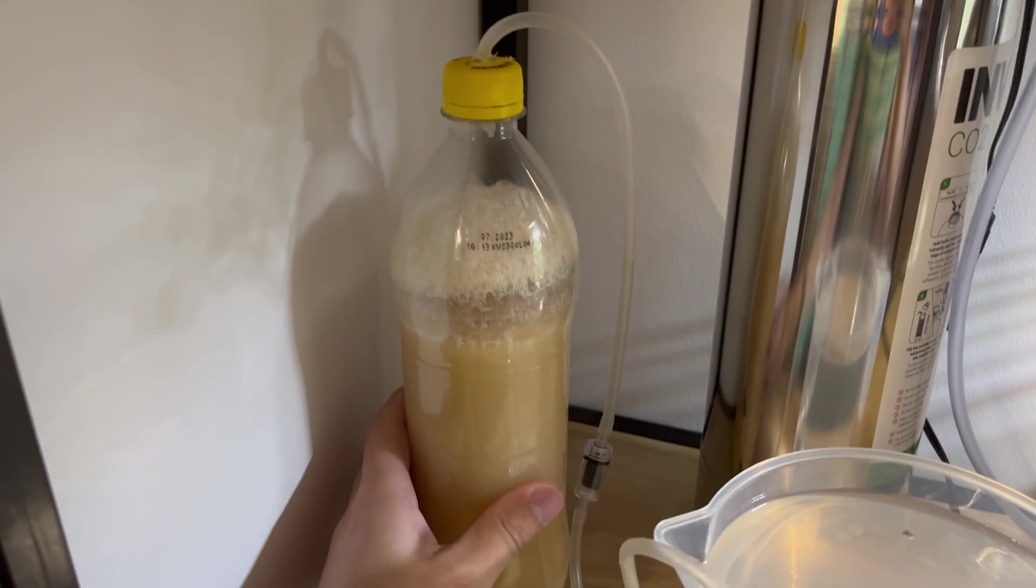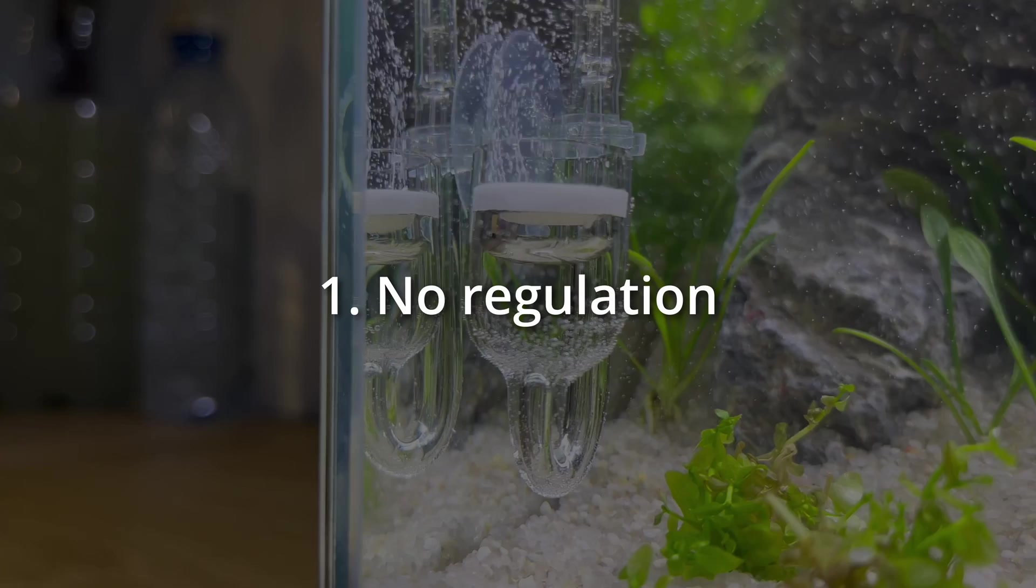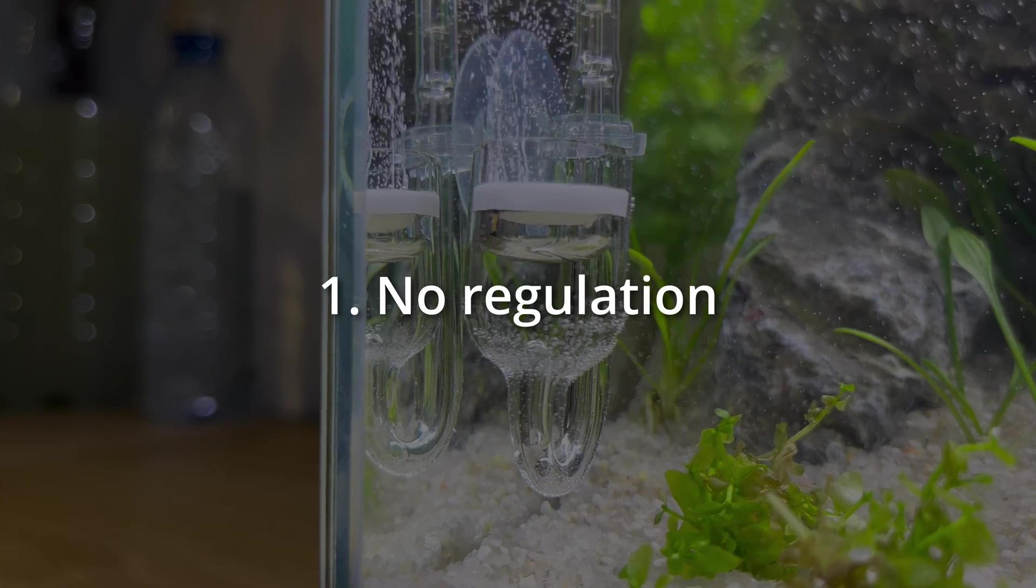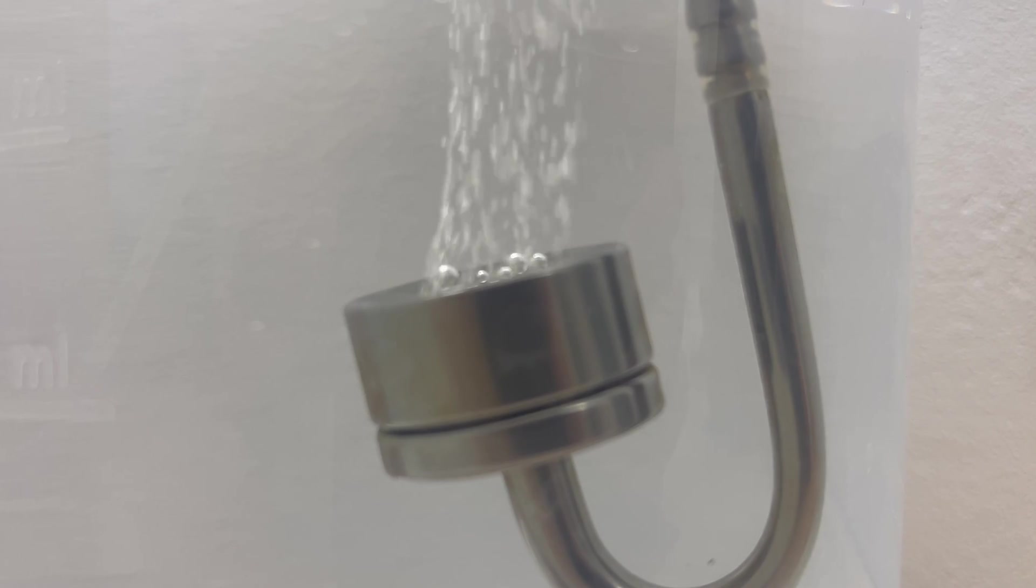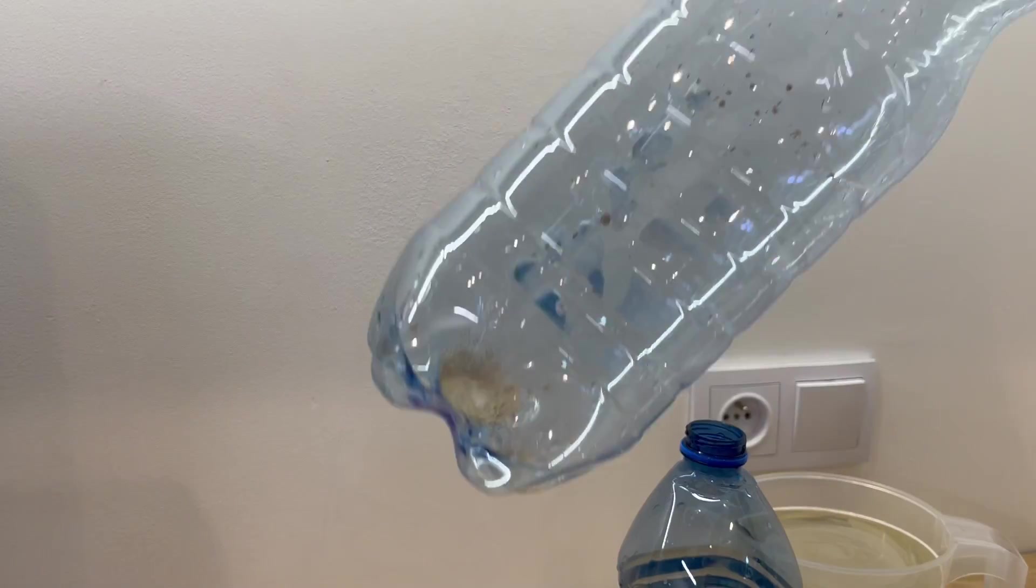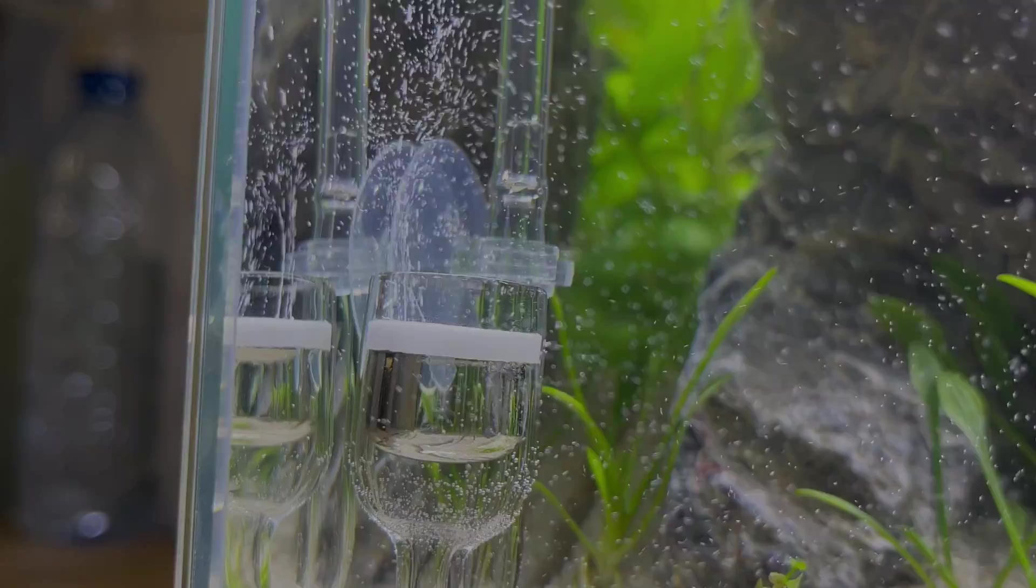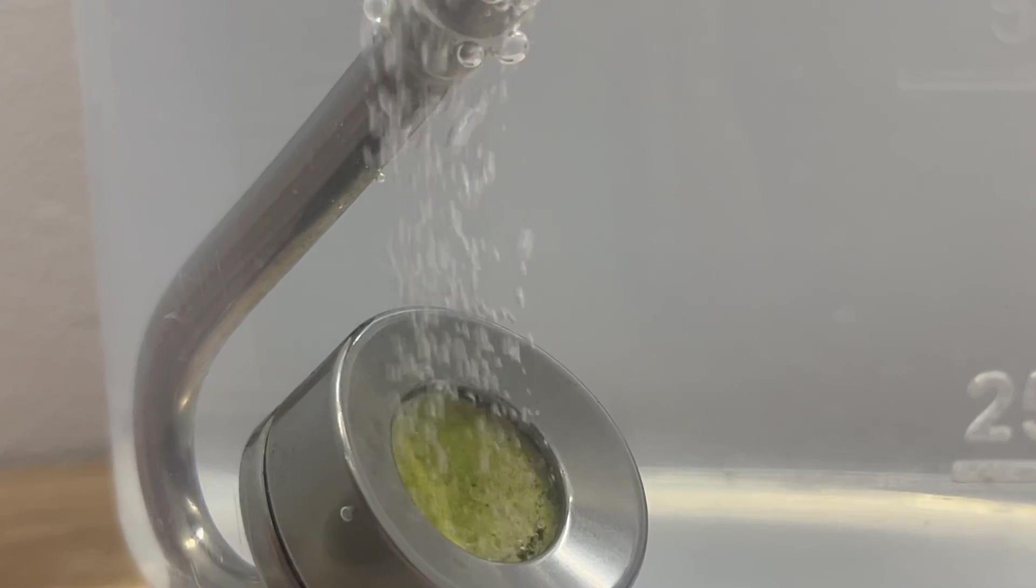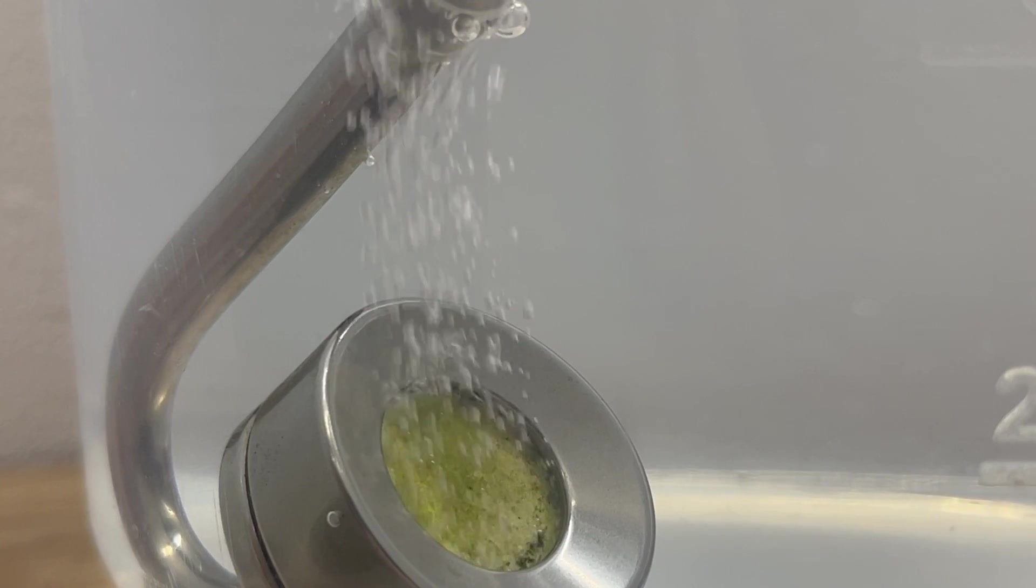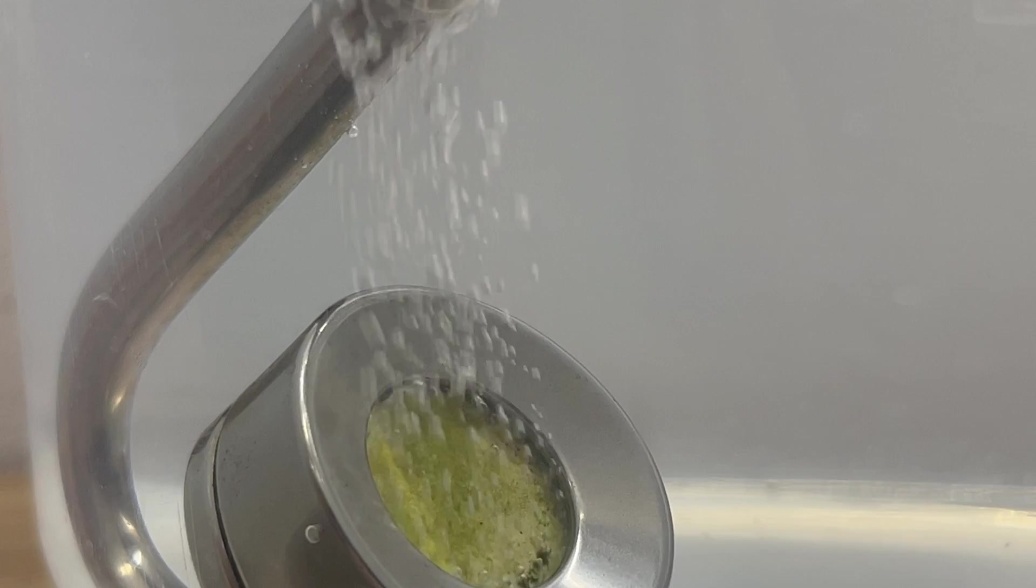But this kind of system also comes with a few disadvantages. First of all, there is no way of regulating it. Meaning that once the mixture is done, CO2 will be produced at a certain speed, and there is nothing you can do about it. This is why it's important to use proper amount of yeast from the very beginning. The more yeast you use, the faster the reaction will be. It will create much more CO2, but of course, the entire system will last for significantly shorter period of time.